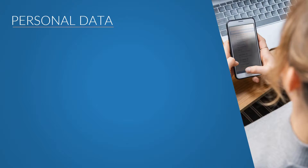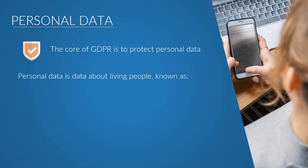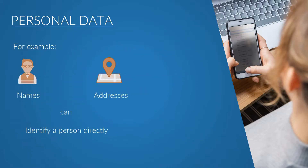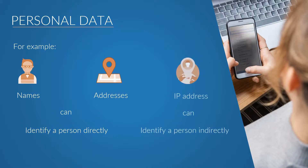Let's start with personal data. The core of GDPR is to protect personal data. Personal data is data about living people, who are also known as individual data subjects or natural persons within GDPR. They can be identified directly or indirectly from personal data. For example, a name and address identifies a person directly, whereas an IP address can be used to identify a person indirectly.